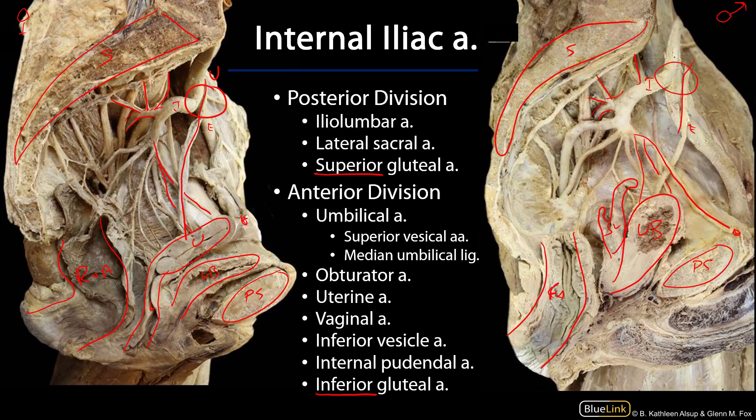The next major artery is the obturator artery. The obturator artery is actually heading out of the pelvis through the obturator canal, and it's going to be part of the blood supply to the medial thigh — the adductor compartment of the thigh.